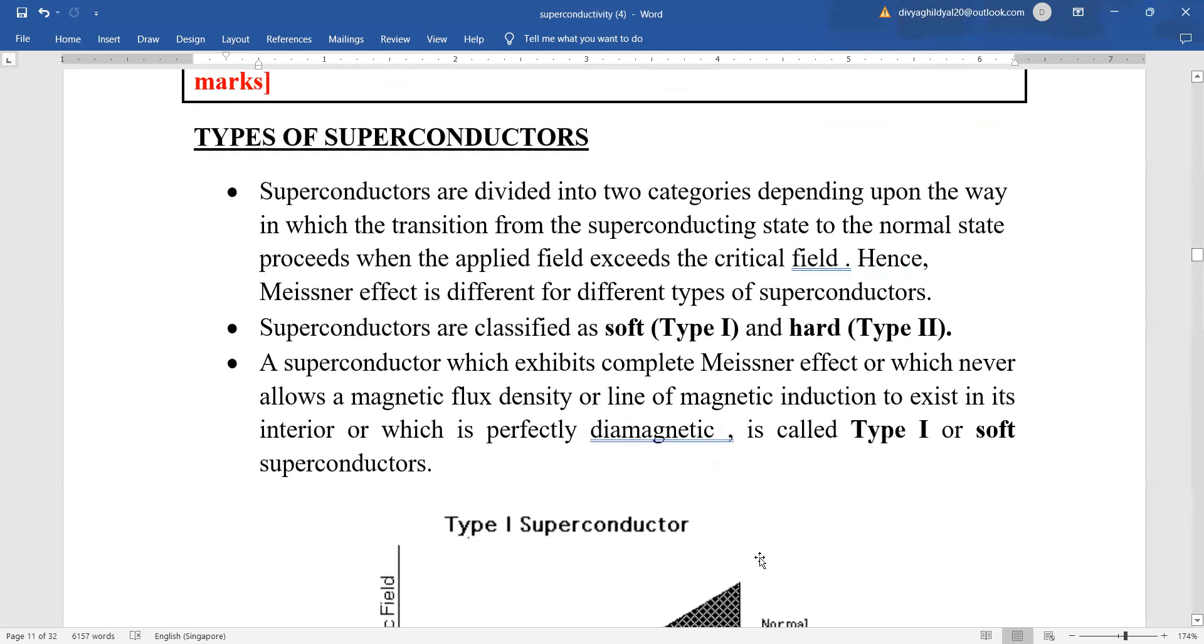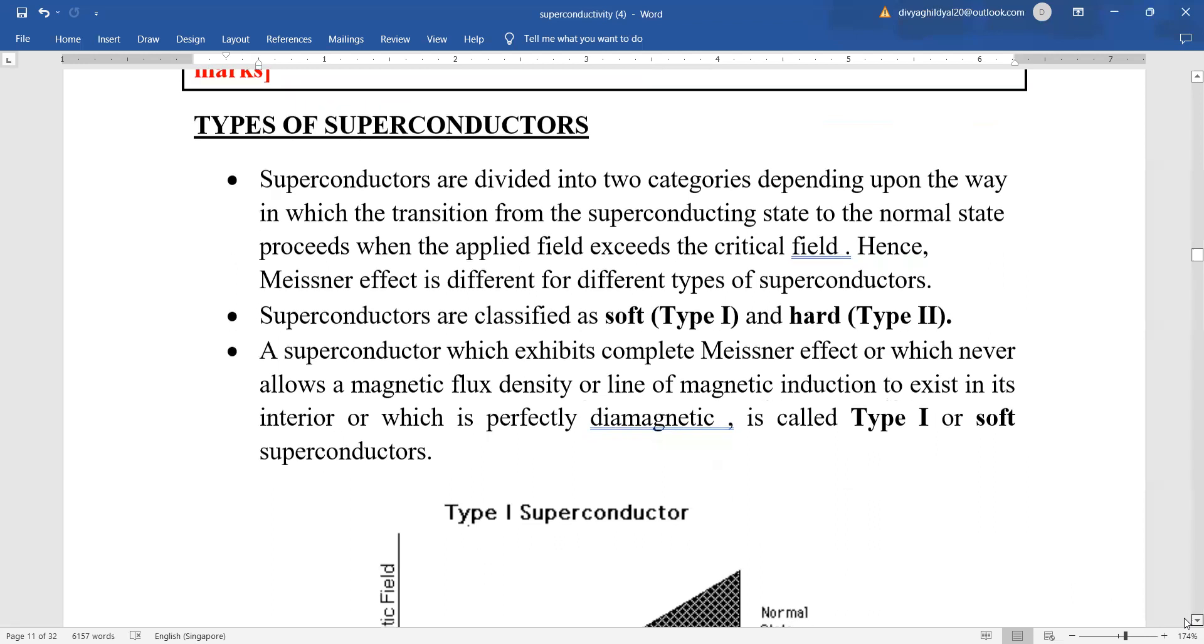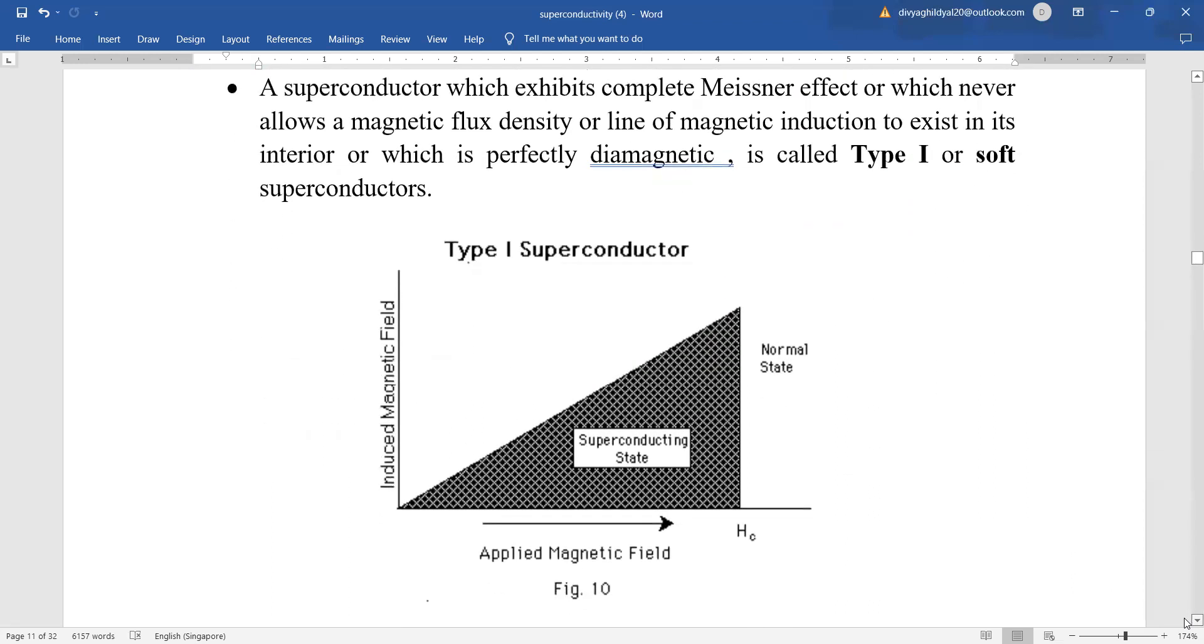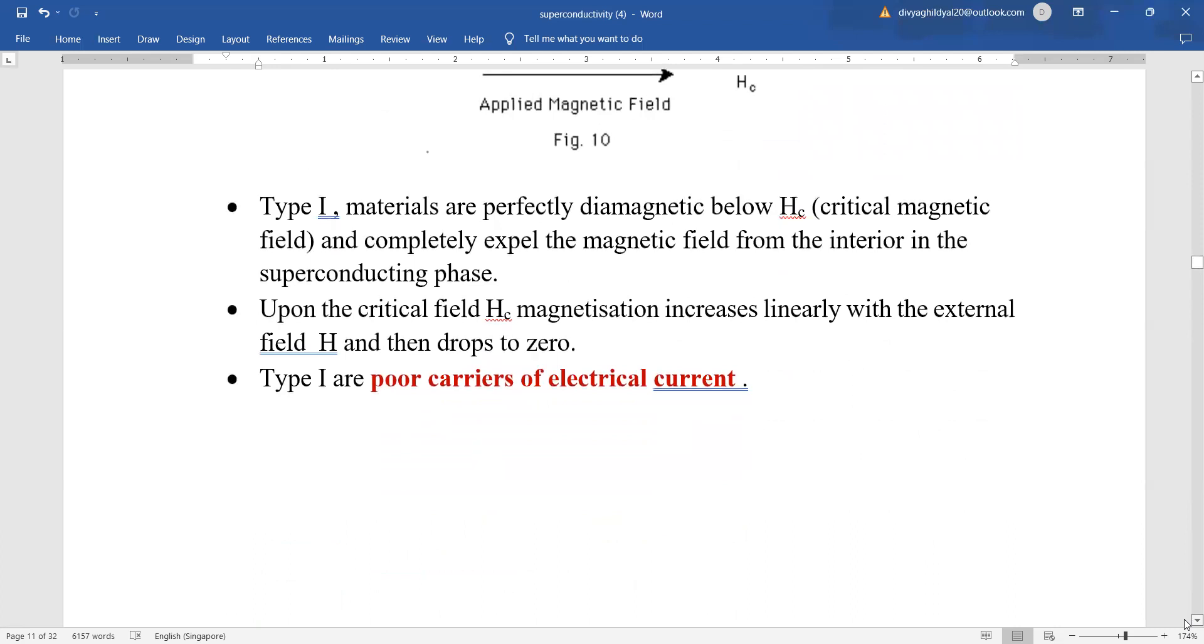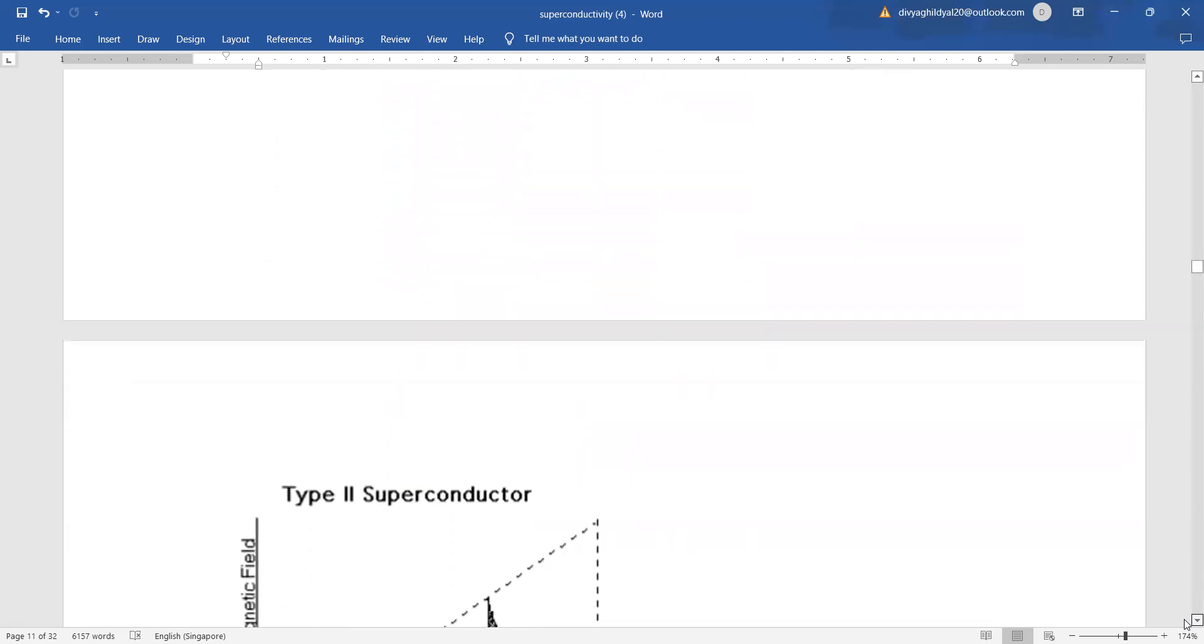Superconductors which exhibit complete Meissner effect or which never allow a magnetic flux density or line of magnetic induction to exist in its interior, or they are perfectly diamagnetic, are called type 1 or soft superconductors. As you can see, below critical field it is in the superconducting state and above it it is in the normal state. Type 1 materials are perfectly diamagnetic and they are poor carriers of electrical charge.